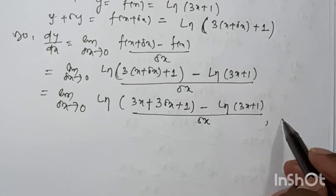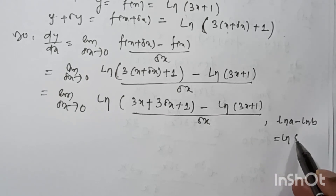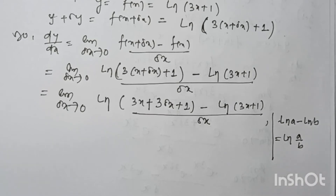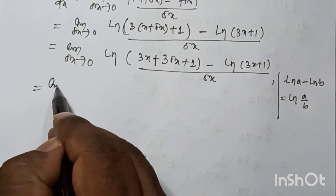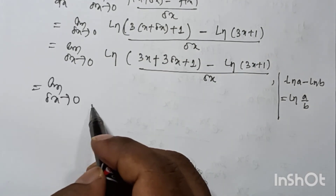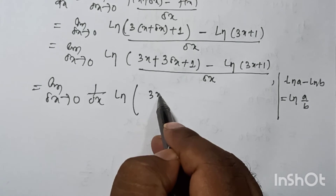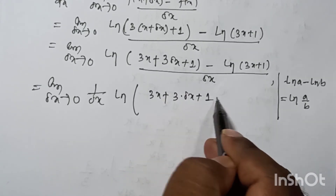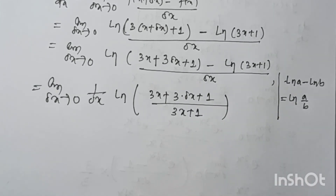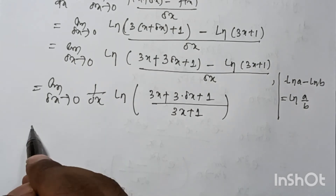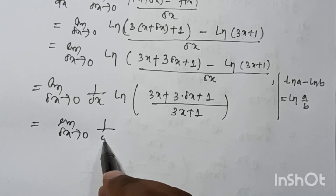We know that ln(a) minus ln(b) can be written as ln(a/b) by the logarithm formula. So we can write: limit as δx tends to 0 of (1/δx) times ln[(3x + 3δx + 1) divided by (3x + 1)].